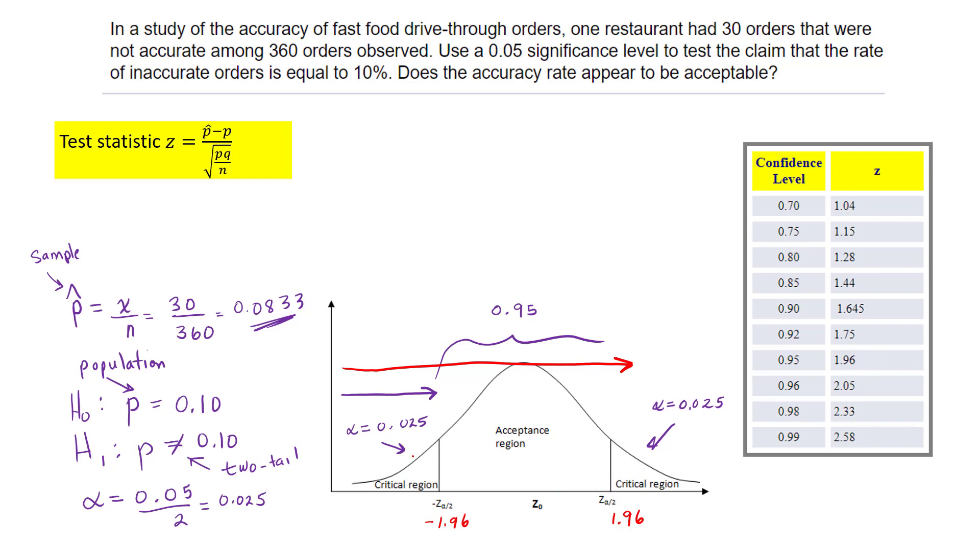Now I'll find the test statistic to see if it falls in the critical region. I have my sample proportion p-hat, subtract the population proportion p, then divide by the square root of p times q over n. Remember q is 1 minus p, so 0.9, all over the square root of 360.